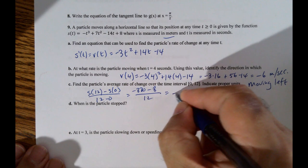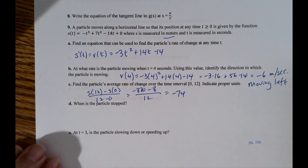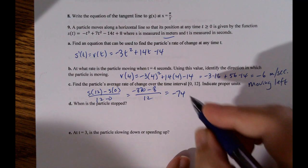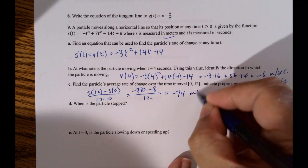Negative 880 divided by 12. Let's see, negative 74. It's negative 74. And this is meters per second.